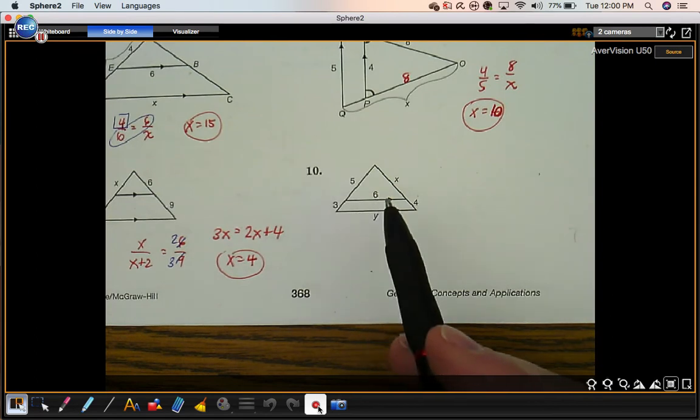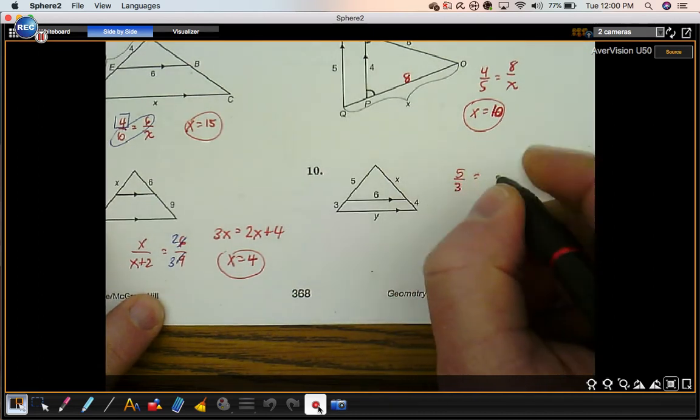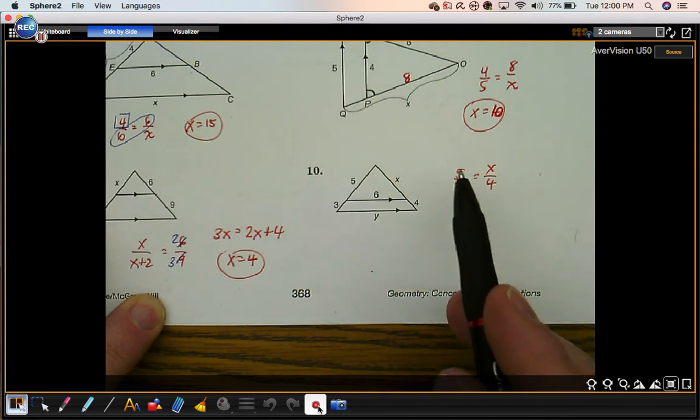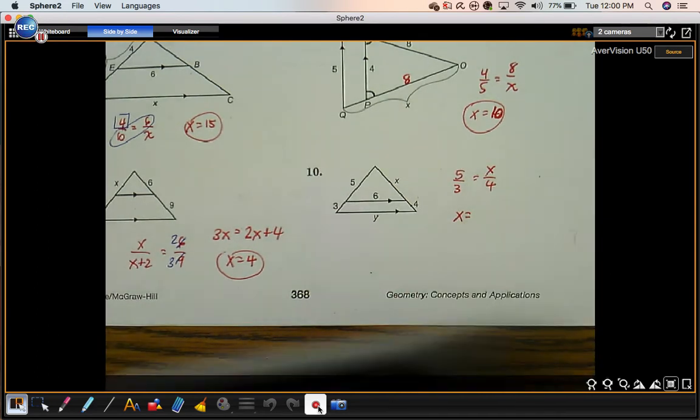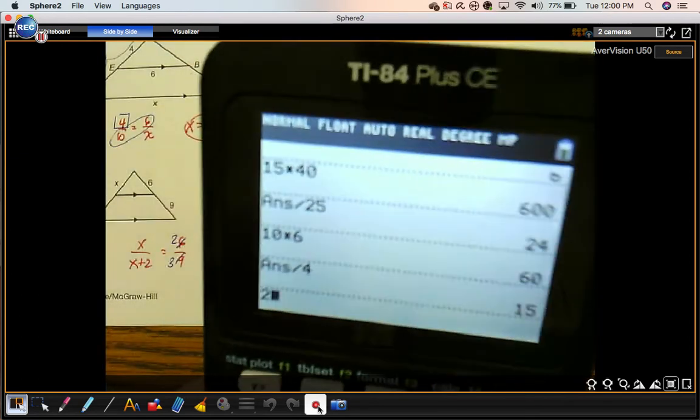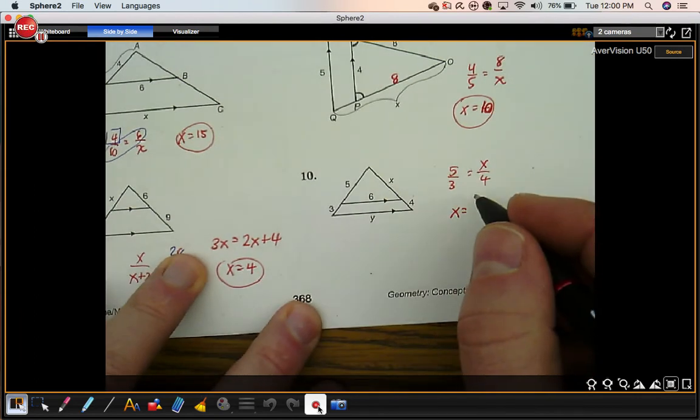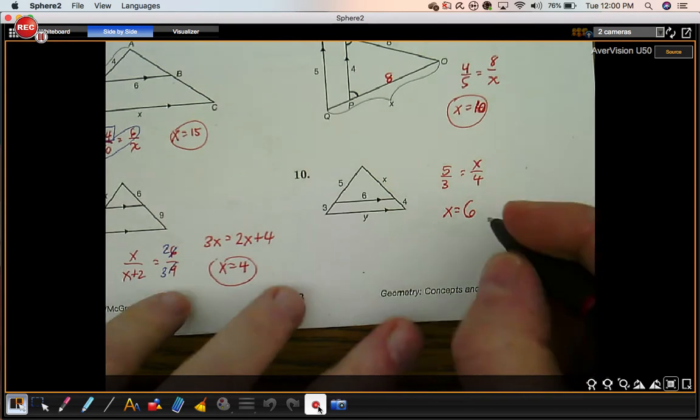Number 10. Same diagram. We can use that side splitter theorem we just used in number 9. We'll say that 5 to 3 equals x to 4. 20 divided by 3. That's going to give you a decimal obviously. 3 goes into 20 six times with 2 left over.